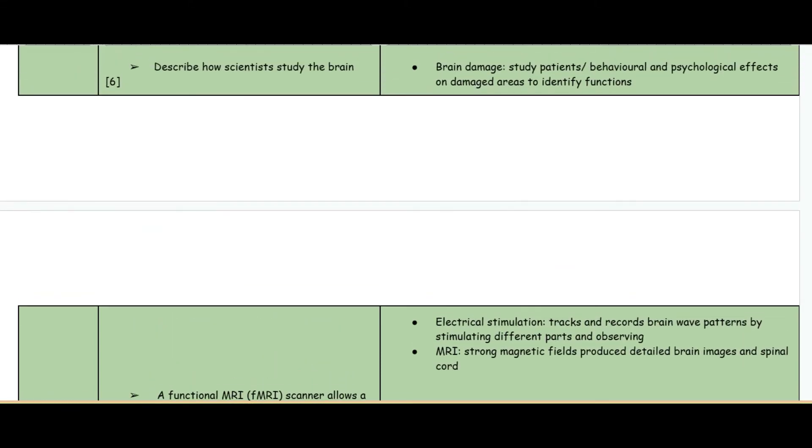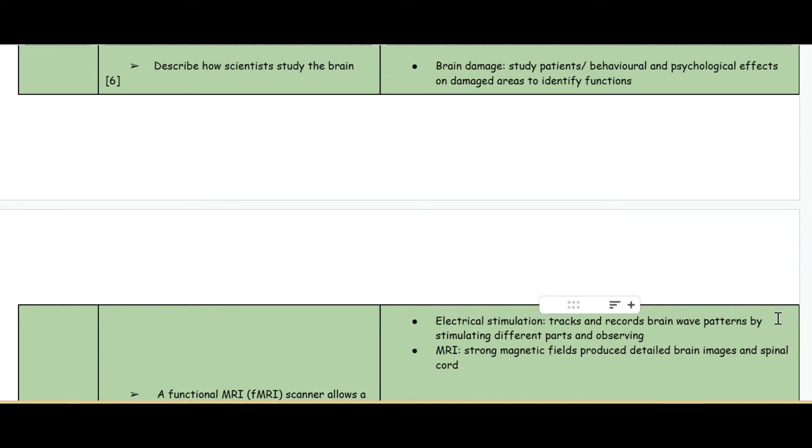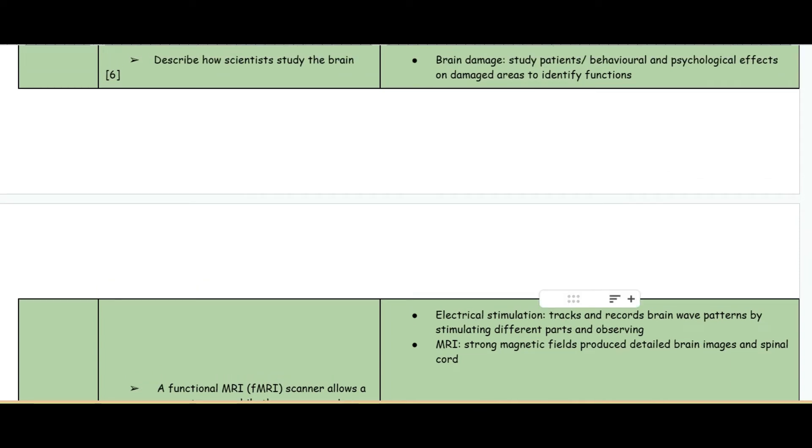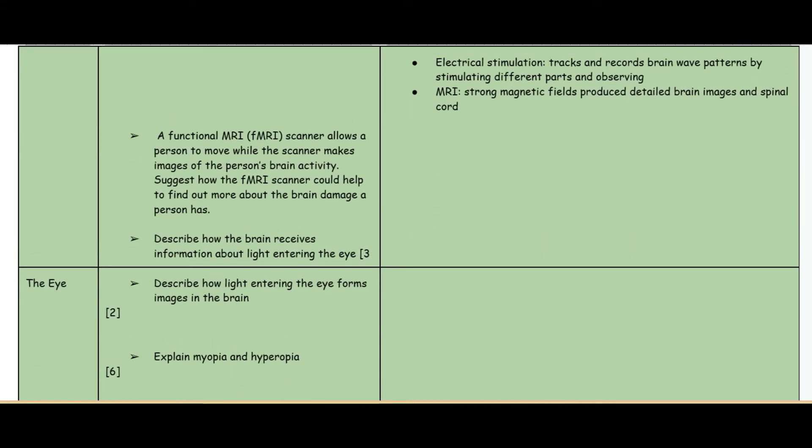The second method is electrical stimulation, stimulating parts of the brain through electricity and observing what effects that has on the person. The final method is MRI, which is when you're getting the person to do different activities and then you're looking at what parts of the brain light up. It stands for magnetic resonance imaging.